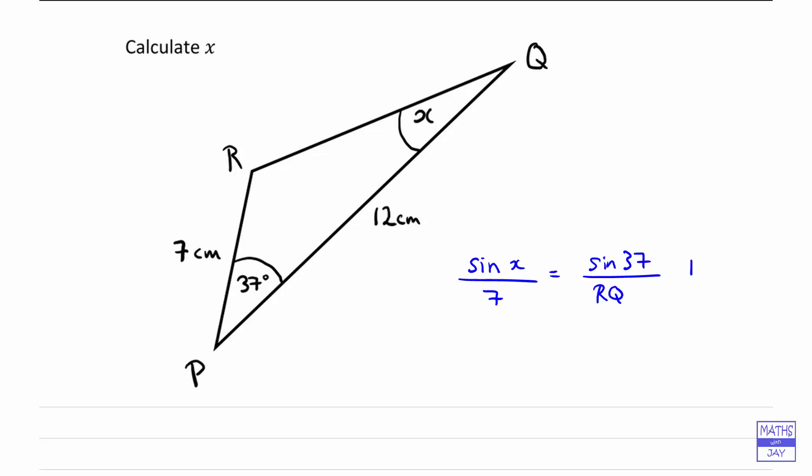So let's just number that one and hopefully we'll be able to use that later on if we can find RQ. So now looking at that triangle, we're thinking okay we know two sides and the angle between them, can we find the side opposite the angle 37? And we can, that's what the cosine rule is for.